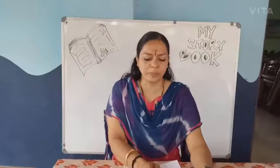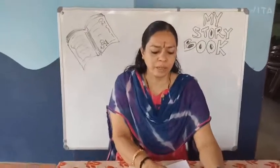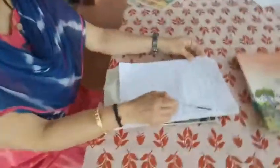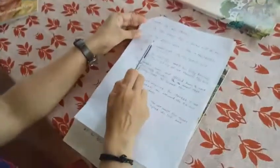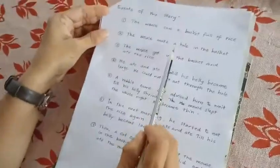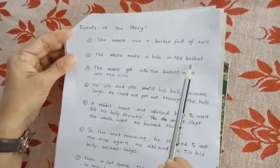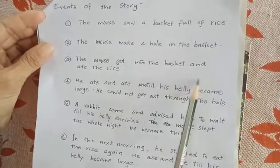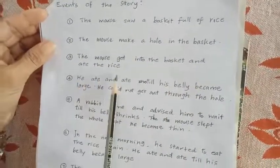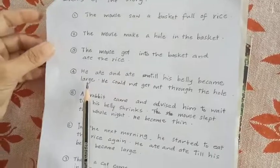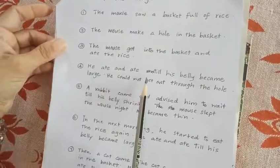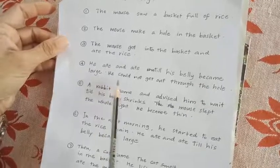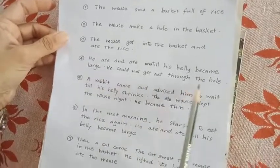Events of the story: the mouse saw a basket full of rice. The mouse made a hole in the basket. The mouse got into the basket and ate the rice. He ate and ate until his belly became large. He could not get out through the hole.